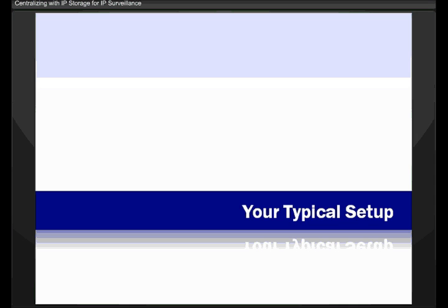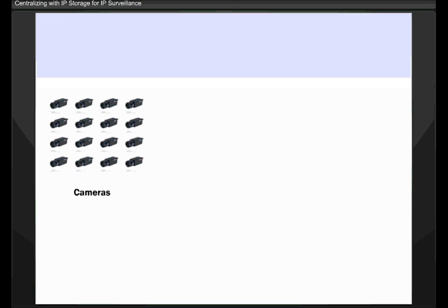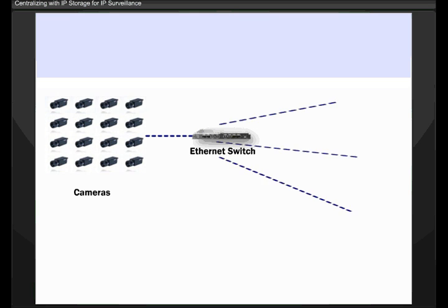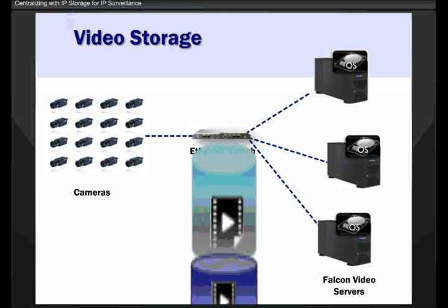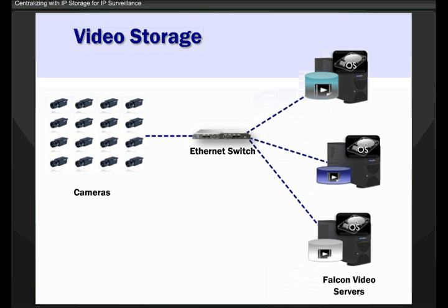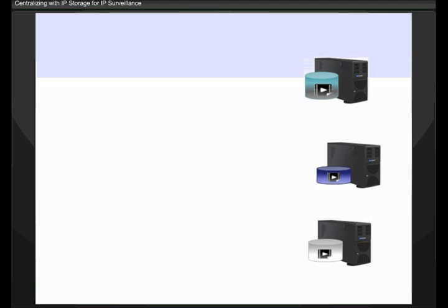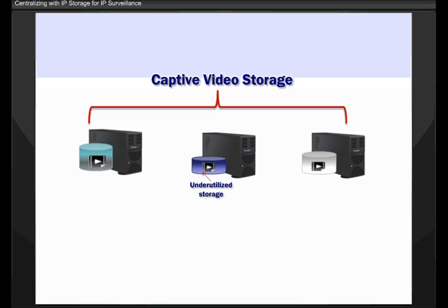Let's take a look at a typical camera network server setup. You usually have your cameras connected to the switch, switch to the server. You have a Windows OS disk and usually some storage on each of the servers, with video content on the servers. The problem with this typical setup is these servers can't share their disk resources. If two of the servers are at maximum capacity and the third server has lots of available space, there's no way for the other two to use that available space.